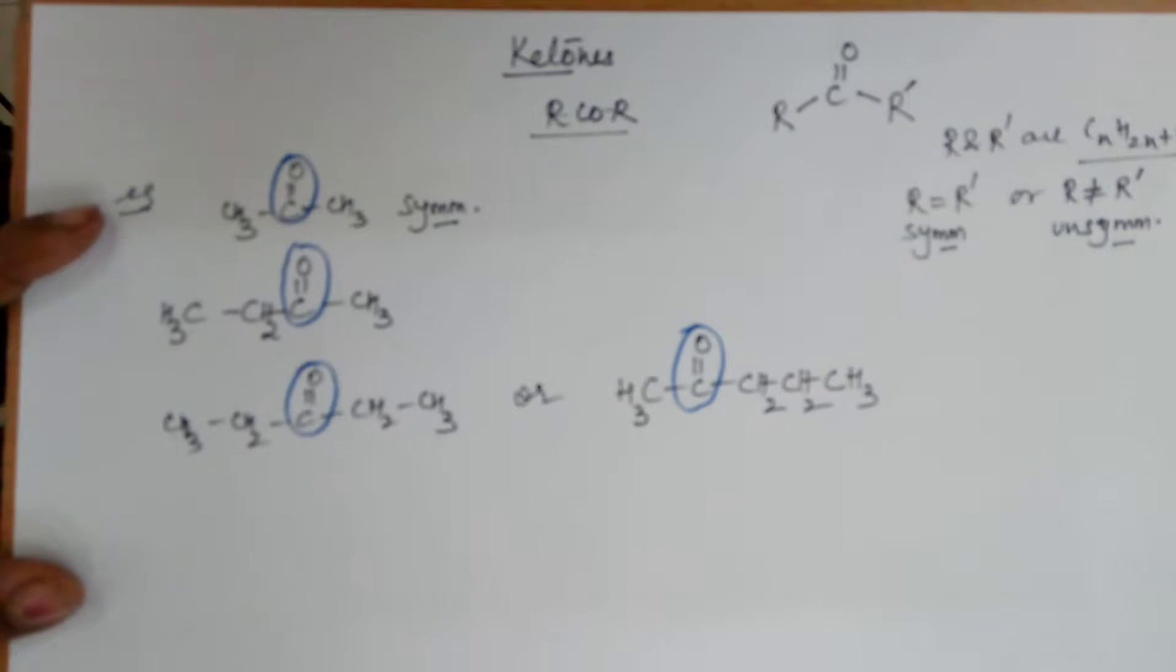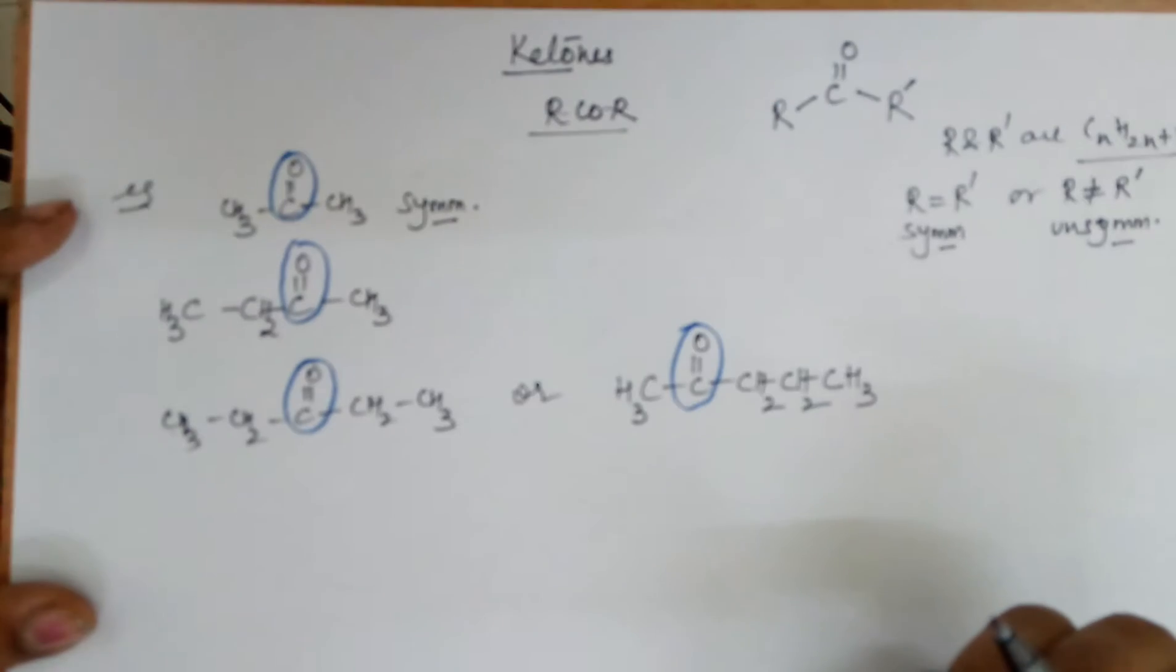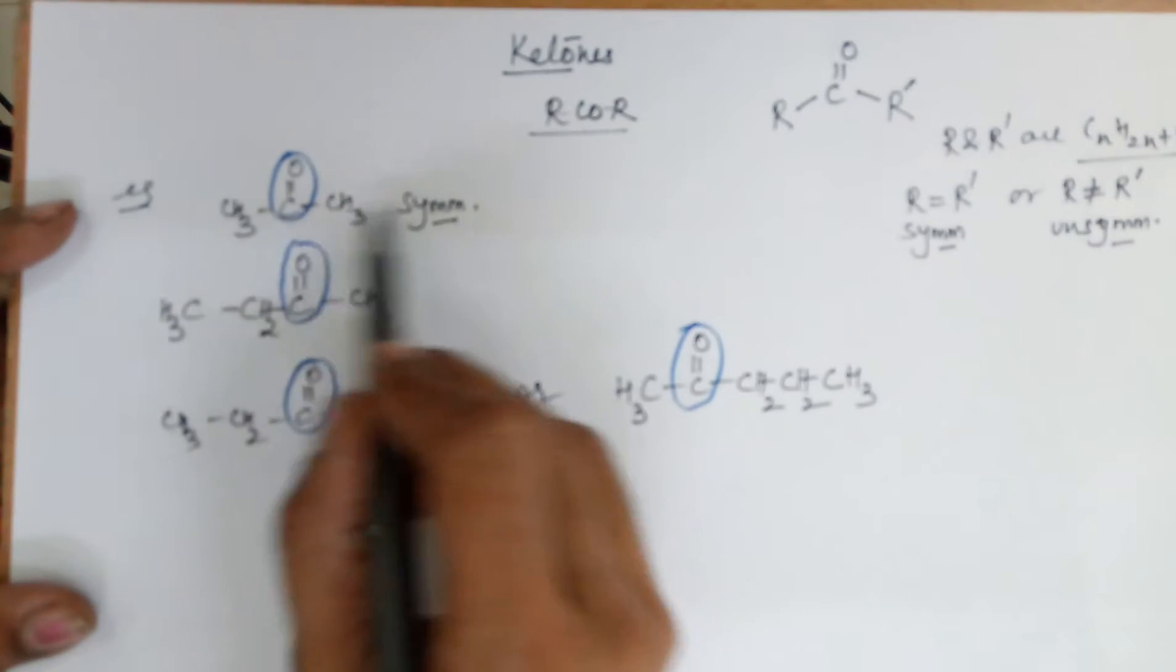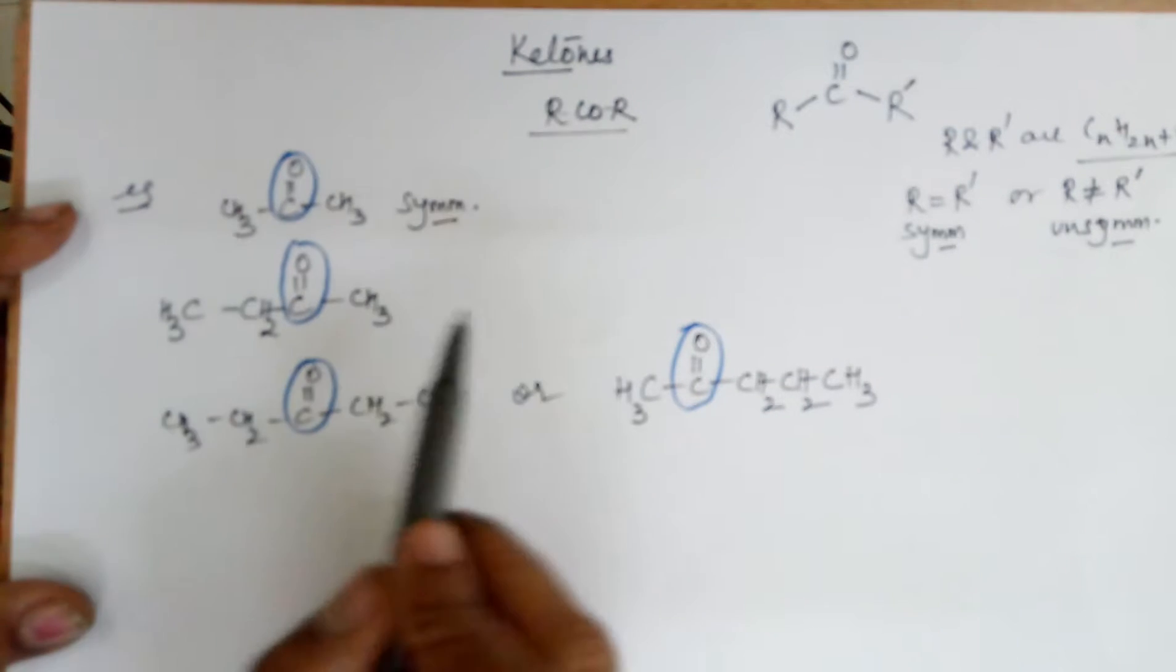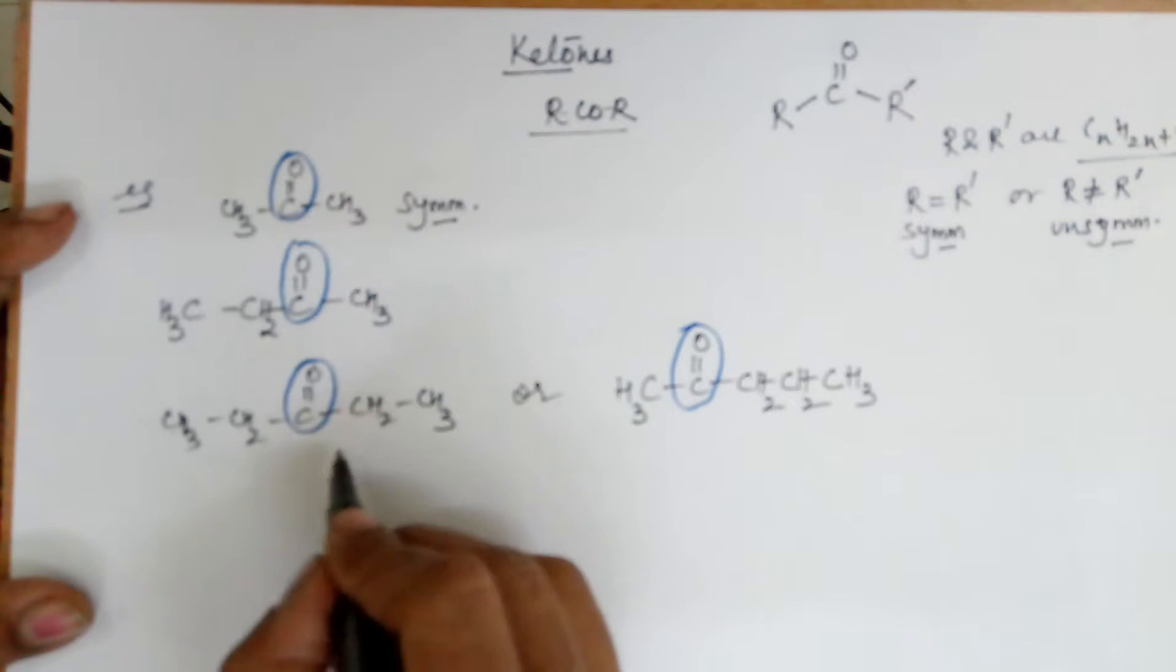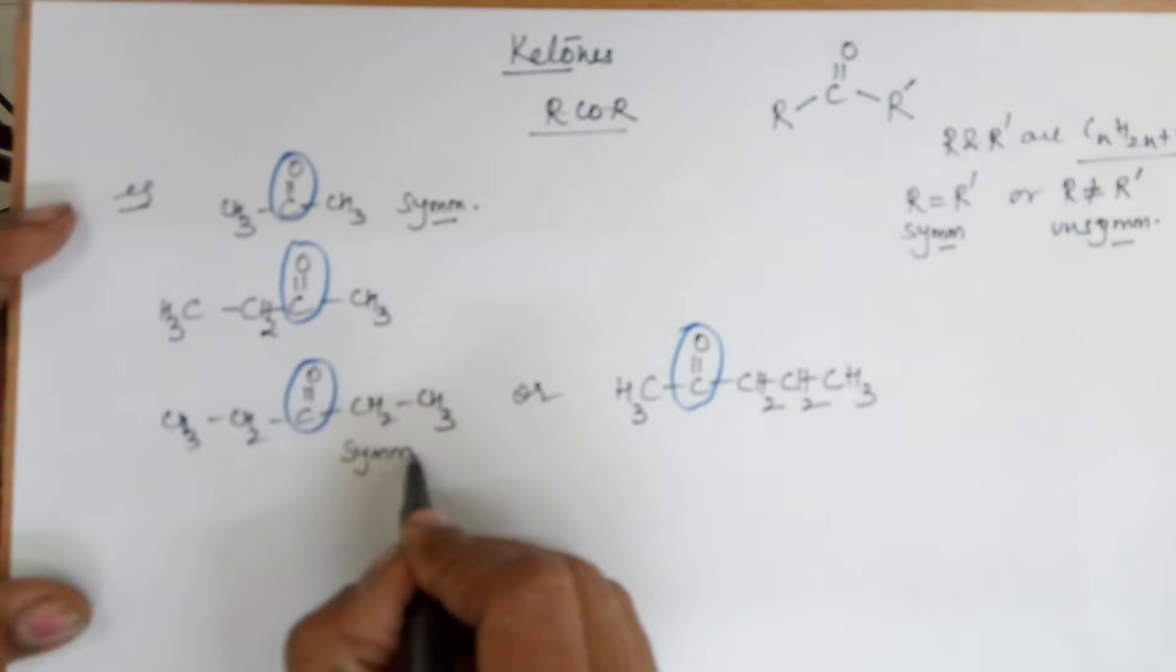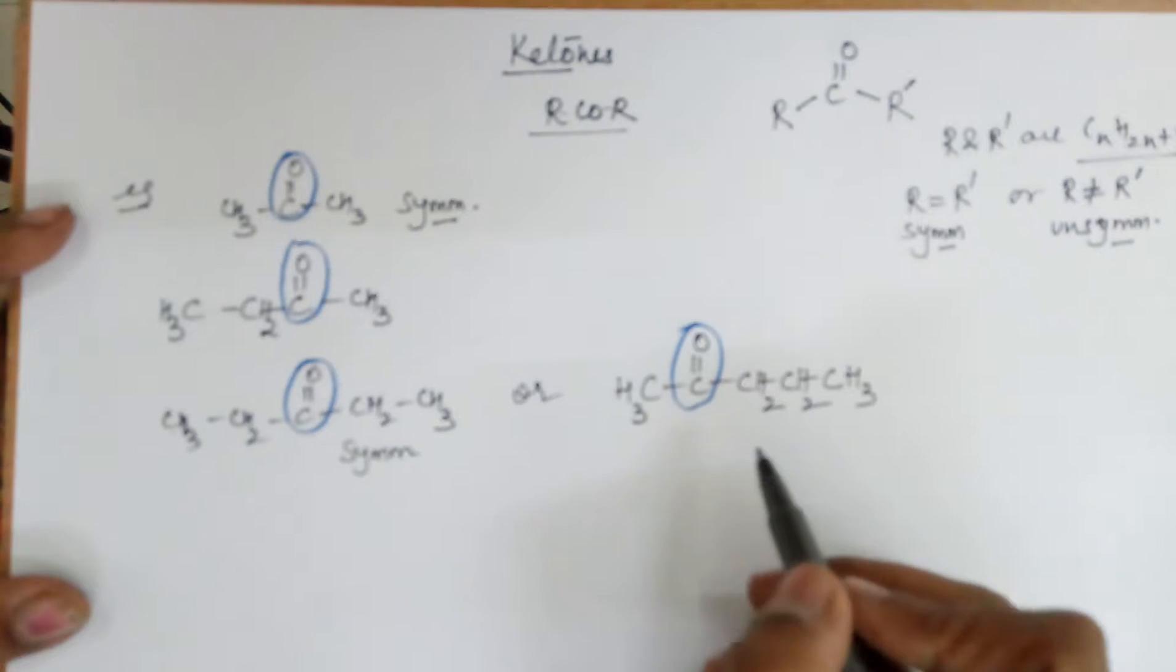To identify a ketonic group, you need to check a C double bond O and you should have both sides carbon chains. This is a symmetrical one. What about this? One carbon this side, two on this side, unsymmetrical. What about this? Two carbons here, two carbons here. So this is also symmetrical. And about this? Three carbons here, one carbon here. Again unsymmetrical.